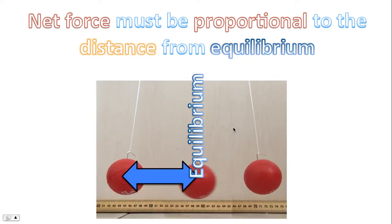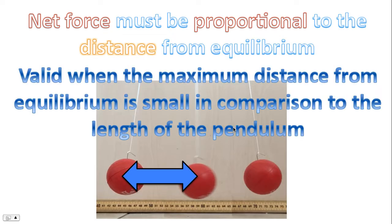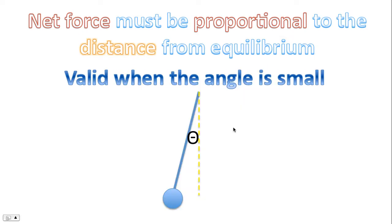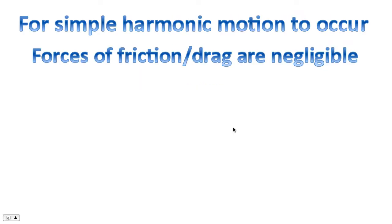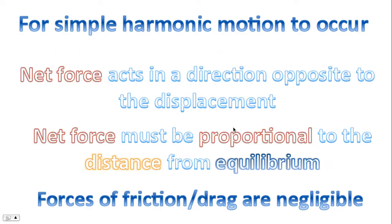For a pendulum, the equilibrium position is shown there. This condition is valid when the maximum distance from equilibrium is small in comparison to the length of the pendulum — in other words, it's valid when the angle is very small. In addition, for simple harmonic motion to occur, the forces of friction and drag must be negligible. So these are the three conditions: net force acts in the direction opposite to the displacement; net force must be proportional to the distance from equilibrium; and the forces of friction or drag must be negligible.